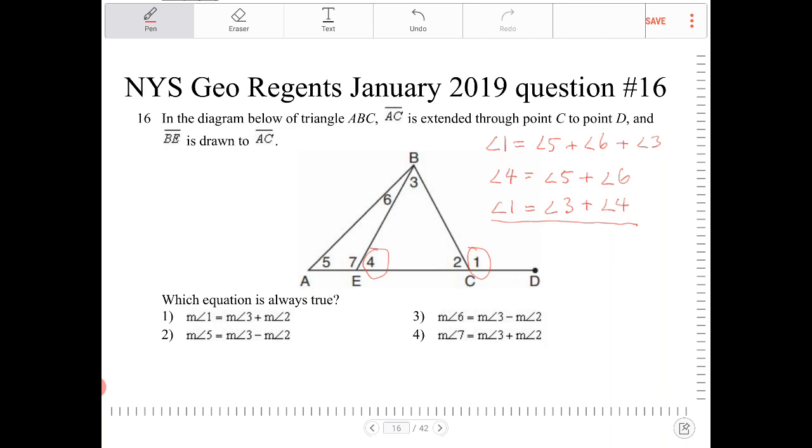Number 3, angle 6 is equal to 3 minus 2. That again does not always have to be the case. Angle 4, or actually option 4, angle 7 is equal to 3 plus 2. That is true.